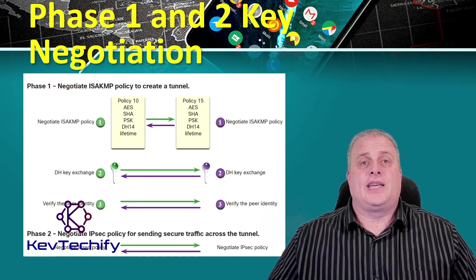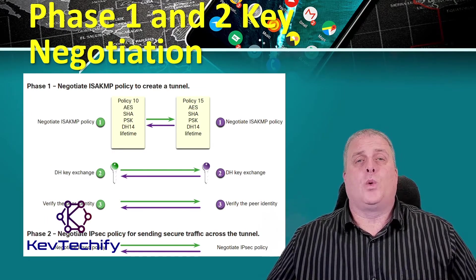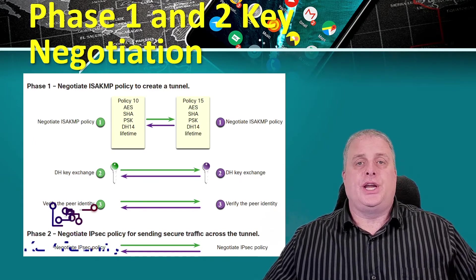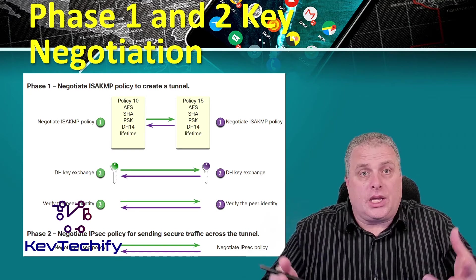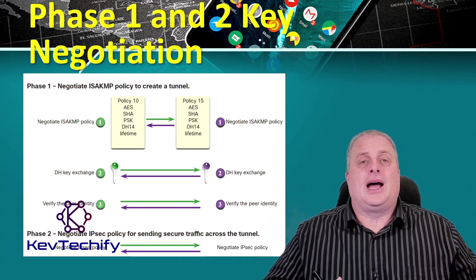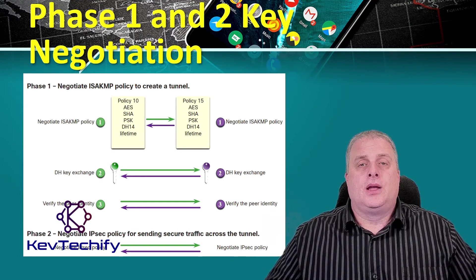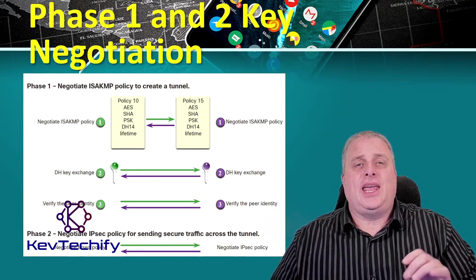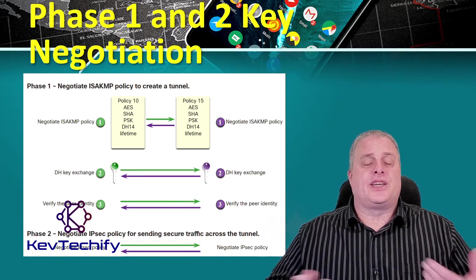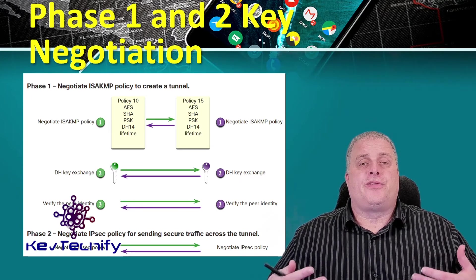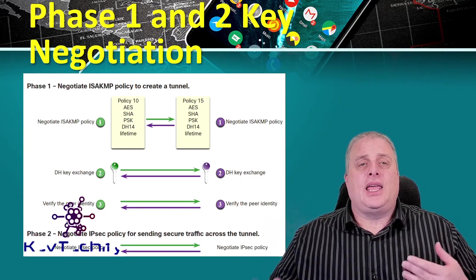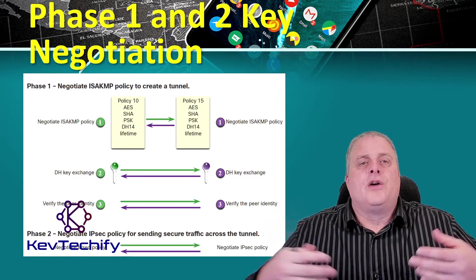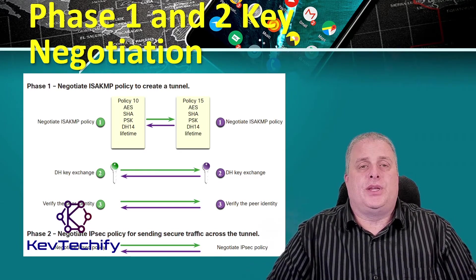IKE uses ISAKAMP for Phase 1 and Phase 2 of the key negotiation. Phase 1 negotiates a security association, or a key, between two IKE peers. The key negotiated in Phase 1 enables the IKE peers to communicate securely in Phase 2. During Phase 2 negotiation, IKE establishes keys and the security associations for other applications such as IPsec.